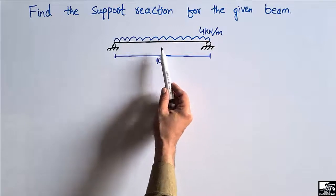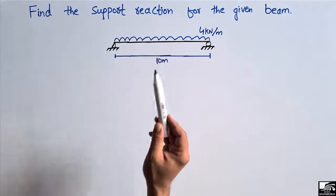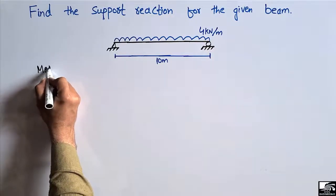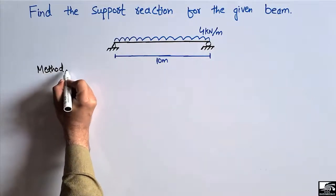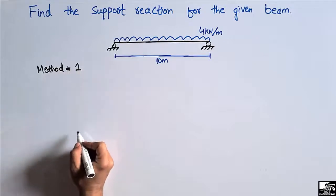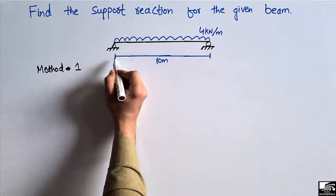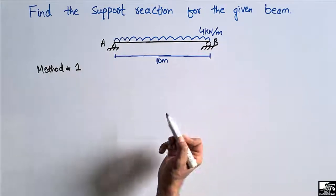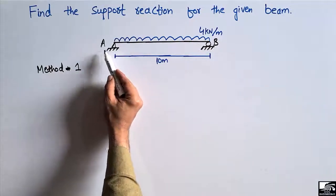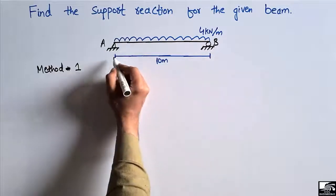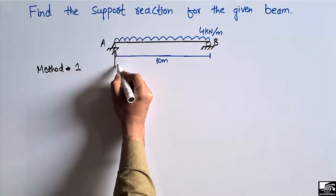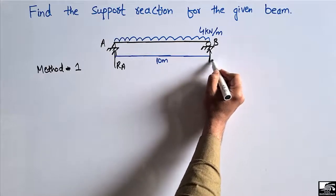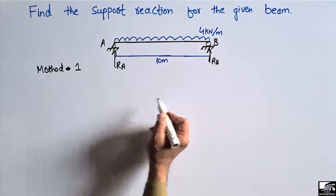We are going to find out the support reaction for this beam by two different methods. The first method is very simple and easy. If you have a simply supported beam with a uniformly distributed load, you can find out the support reactions in just one step. Let's suppose this is support A and this is support B, and these reactions are acting in the upper direction in order to resist the load — RA and RB.